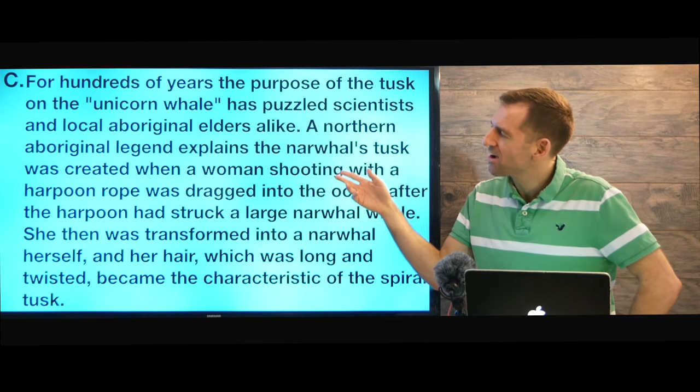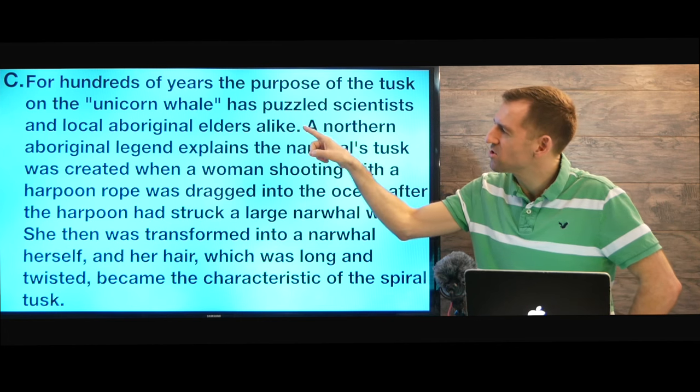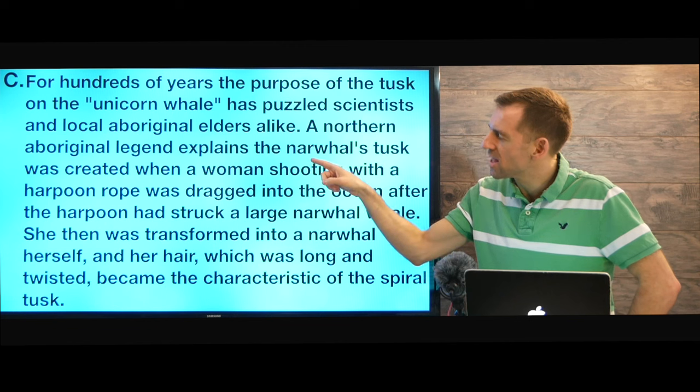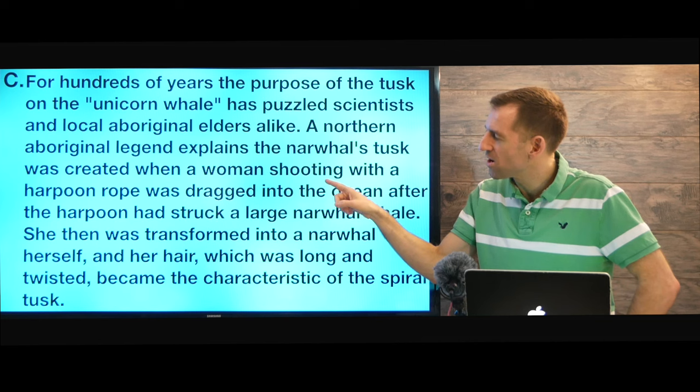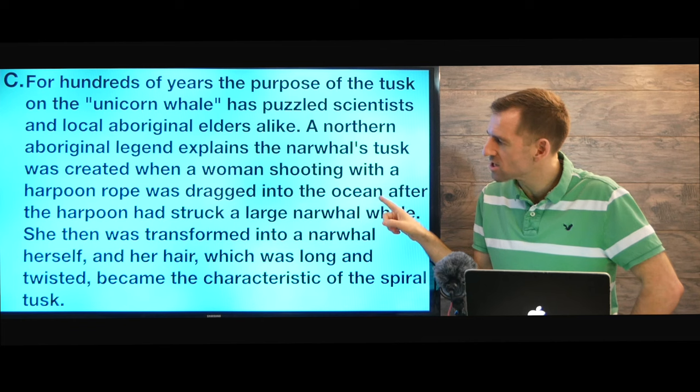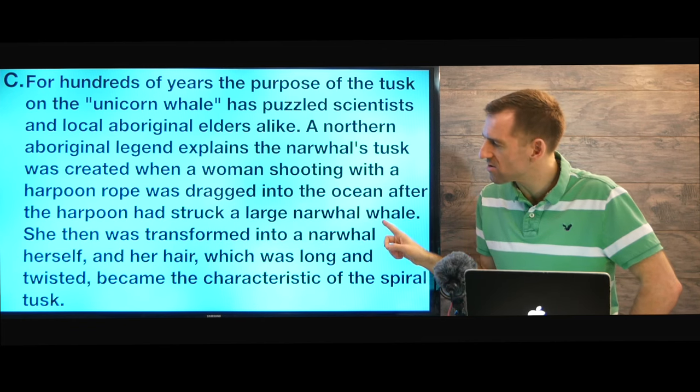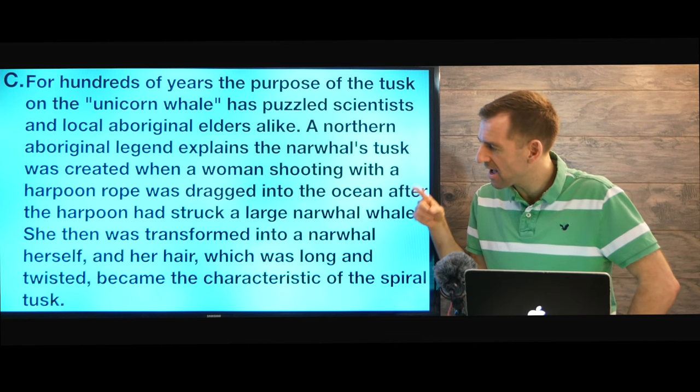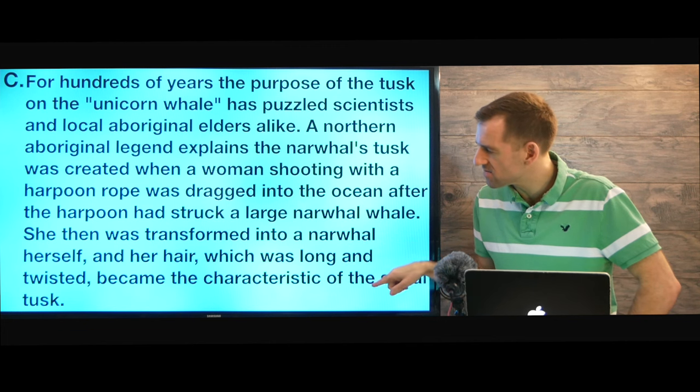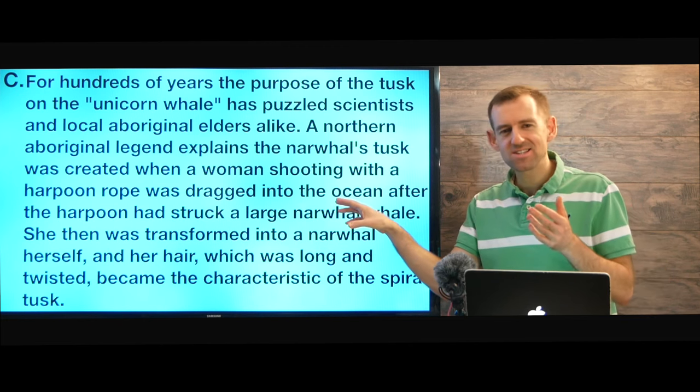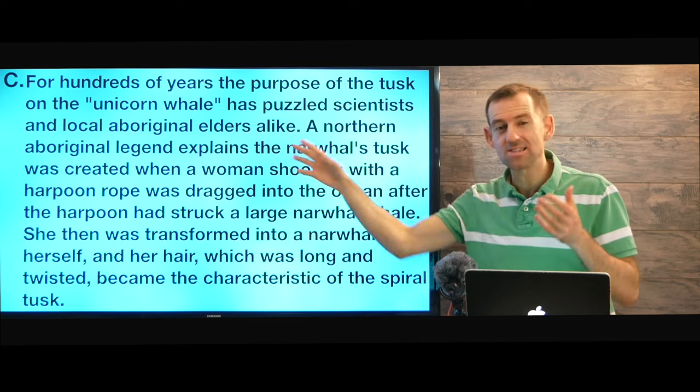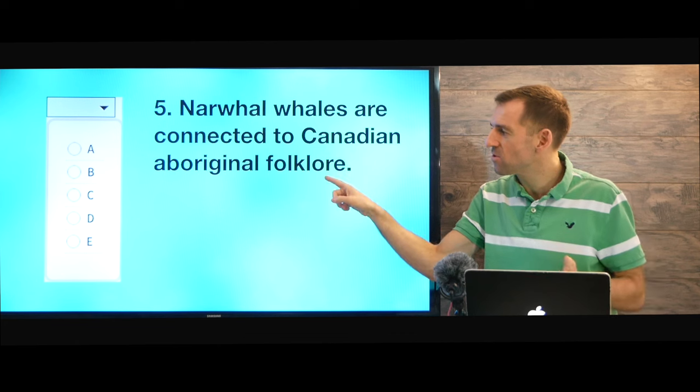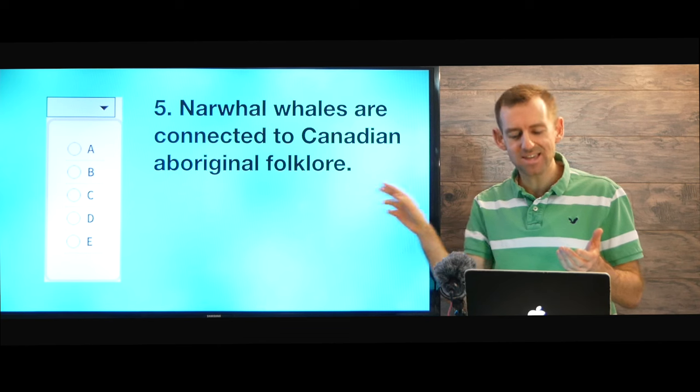Okay let's keep reading. So paragraph C. For hundreds of years the purpose of the tusk on the unicorn whale has puzzled scientists and local aboriginal elders alike. A northern aboriginal legend explains the narwhal's tusk was created when a woman shooting with a harpoon rope was dragged into the ocean after the harpoon had struck a large narwhal whale. She then was transformed into a narwhal herself and her hair which was long and twisted became the characteristic of the spiral tusk. Okay so what is this talking about? This is talking about aboriginal legend. Okay so that was one of our questions right? Narwhal whales are connected to Canadian aboriginal folklore. Yes they are. So we put paragraph C. And we move on.